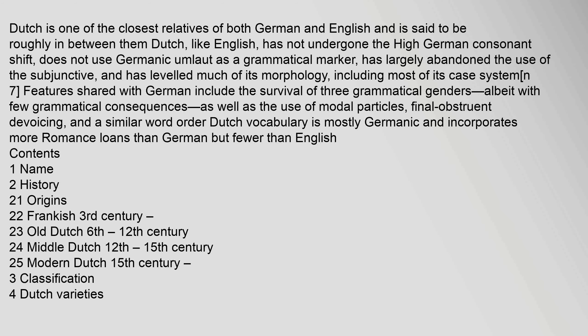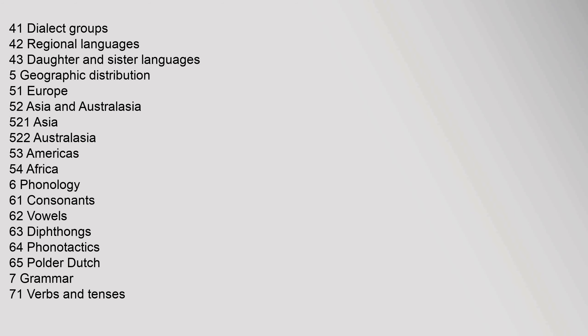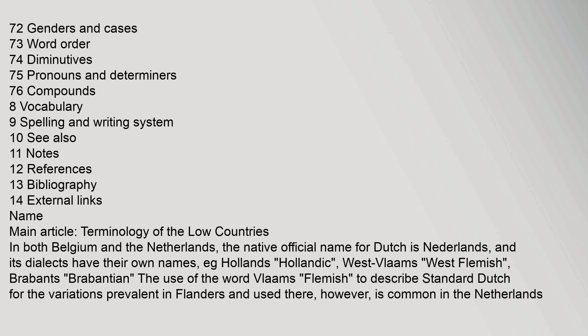Contents: 1. Name, 2. History (Origins, Frankish 3rd century, Old Dutch 6th–12th century, Middle Dutch 12th–15th century, Modern Dutch 15th century), 3. Classification, 4. Dutch varieties (Dialect groups, Regional languages, Daughter and sister languages), 5. Geographic distribution, 6. Phonology, 7. Grammar, 8. Vocabulary, 9. Spelling and Writing System, and further reference sections.